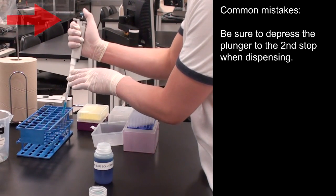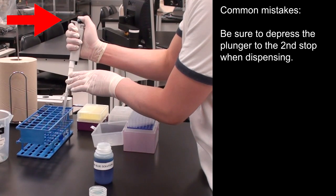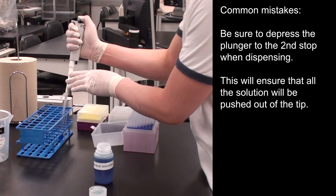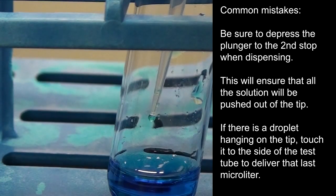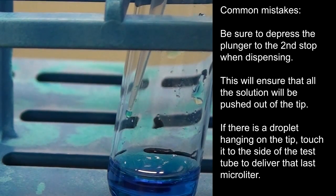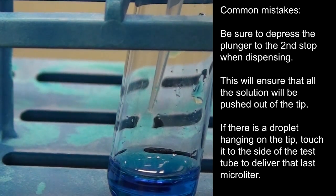Be sure to depress the plunger to the second stop when dispensing. This will ensure that all the solution will be pushed out of the tip. If there is a droplet hanging on the tip, touch it to the side of the test tube to deliver that last microliter.